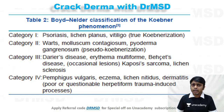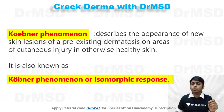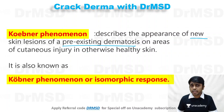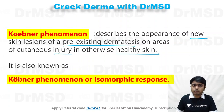Boyd and Elder classified the Koebner phenomenon into four categories, and we will see what all these are. First, I will tell you what Koebner phenomenon is. It is the appearance of new skin lesions of a pre-existing dermatosis on areas of cutaneous injury in an otherwise healthy skin. The Koebner phenomenon is also called the isomorphic phenomenon.